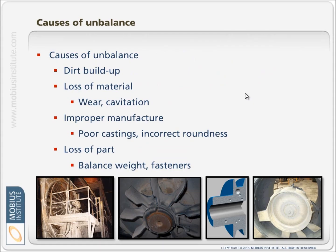Why do we get unbalance? Very commonly in fans, it's just a build-up of dirt. It might be a loss of material through wear, cavitation, erosion, or corrosion. It might be due to poor castings or incorrect roundness — for example, eccentricity. It might be a loss of a part: a balance weight might fall off, a fastener might come away, or there may be loss of part of the coupling. We need to correct any mechanical problems that might exist, like missing blades, and then go through the balance process.